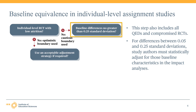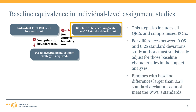A statistical adjustment allows the analysis to account for the differences between groups that the study observed at baseline. We talk more about acceptable statistical adjustments later in the module. And finally, if the baseline difference is greater than 0.25 standard deviations, then the WWC says that the study does not demonstrate equivalence — the baseline differences are too large for the study to address with a statistical adjustment.